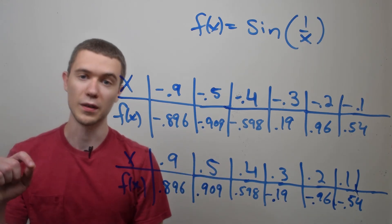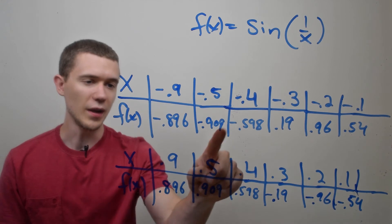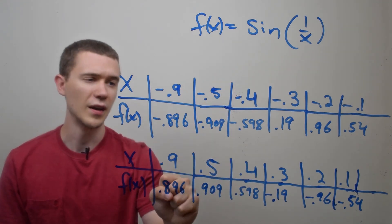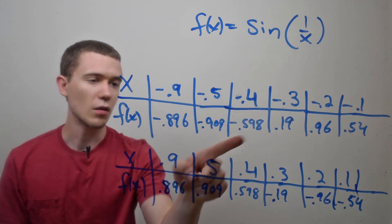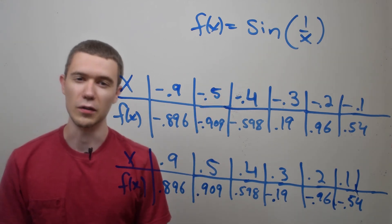But if I plug in minus 0.4, I get minus 0.58. Well that's an increase. Now I'm starting to go back up with the values. And you can see as I plug in numbers closer to 0, I start getting more positive with my values and then more negative with my values. It looks like this limit isn't actually approaching anything.